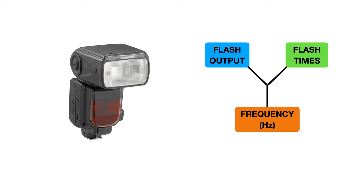Those are the flash power — that is the strength of the light coming out of the flash — the number of times that the flash is going to fire, and the rate, or how quickly those blinks of light will be, which is measured in hertz.